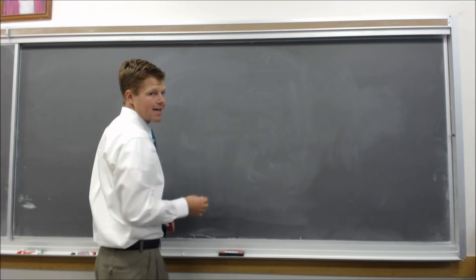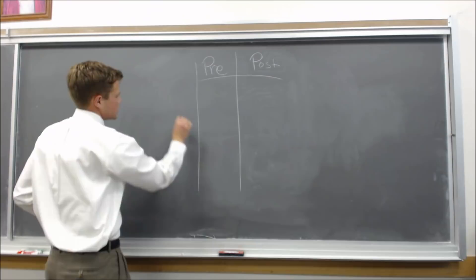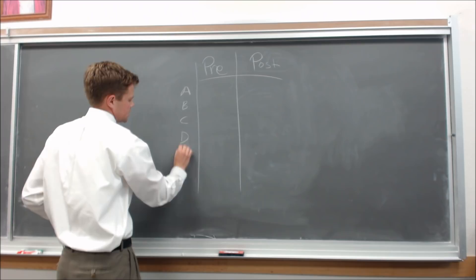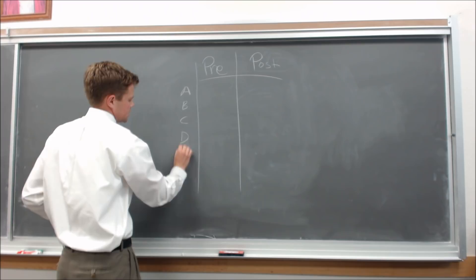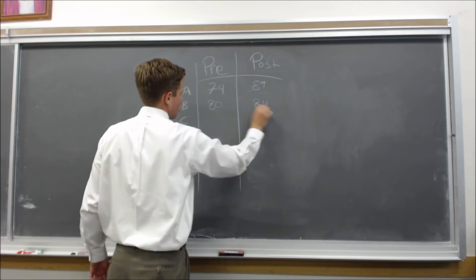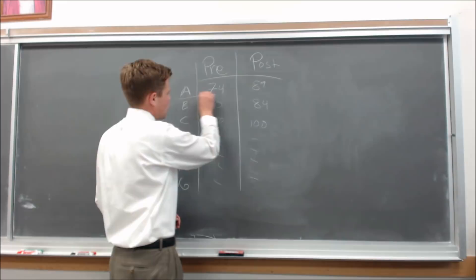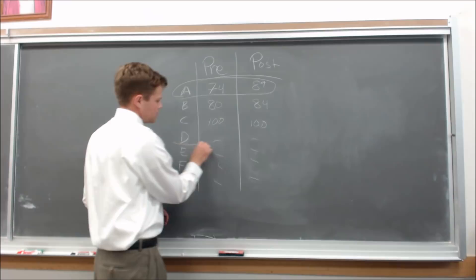For example, if we were doing a pre-test and a post-test, we'd have the pre-test score here and the post-test score here. The students — student A, B, C, D, E, F, G — are the different rows. Matched paired means that if this person got a 74 on the pre-test and an 89, and this person got an 80 and then an 84, and maybe a 100 and a 100 — and so on — it's important that both scores be attached to student A and both scores be attached to student D.